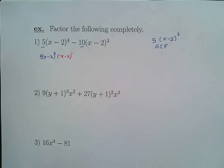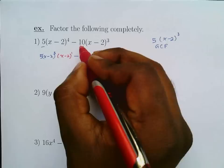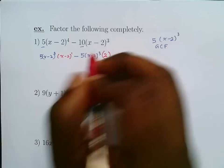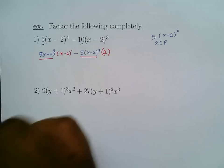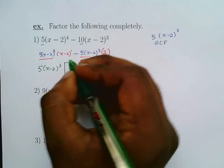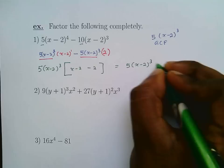Write the GCF: 5(x - 2)³. From the first term, 5(x - 2)⁴, we need one more factor of (x - 2), so we get (x - 2). From the second term, -10(x - 2)³, we just need the coefficient -2. So the factored form is 5(x - 2)³(x - 4).